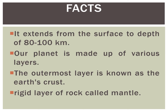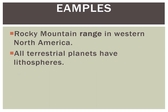Facts about the lithosphere: it extends from the surface to a depth of 80 to 100 km. Our planet is made up of various layers and the lithosphere is one of them. The outermost layer is known as Earth's crust and the rigid layer of rock is called the mantle. A very interesting and common example of the lithosphere is mountain ranges. After the atmosphere comes Earth's crust, which is the outer layer, then comes the lithosphere comprising of the rigid layer of rocks, known as the mantle.